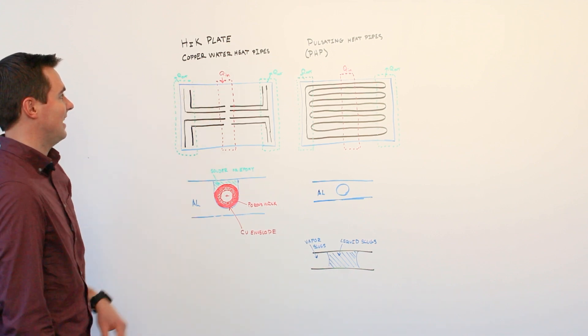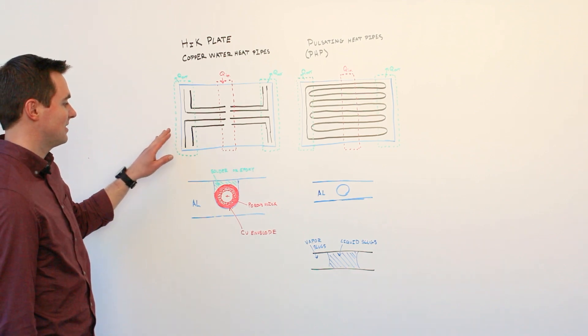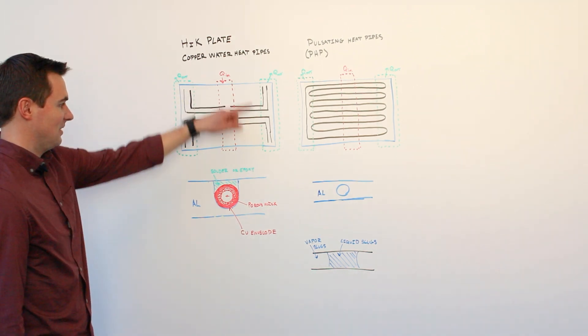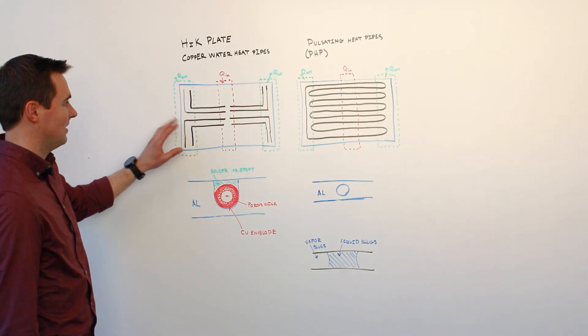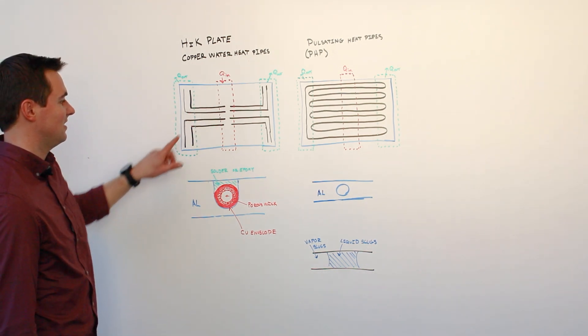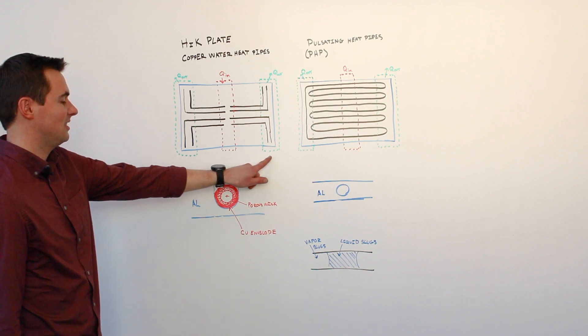High K plates have embedded copper water heat pipes. This schematic shows what a layout on a plate might look like with a heat input area in the center and condenser cold regions on either side.